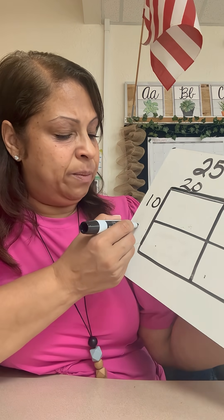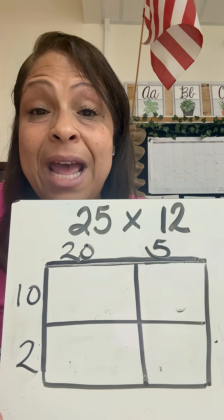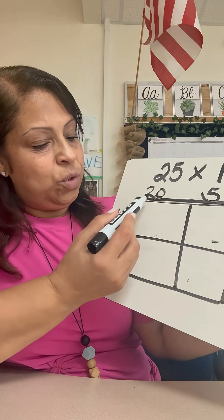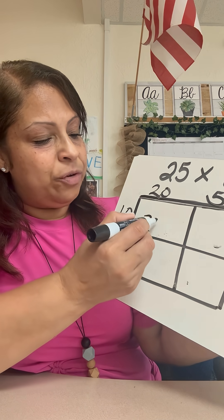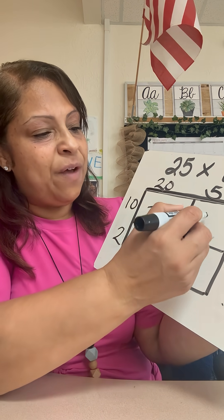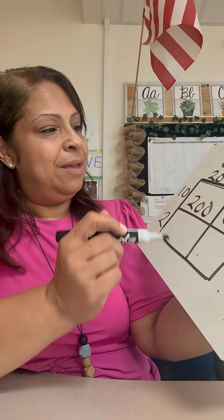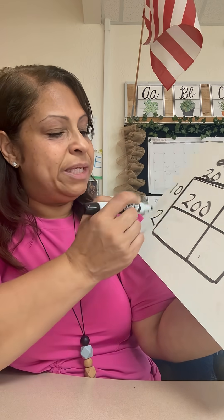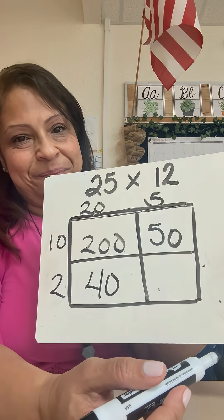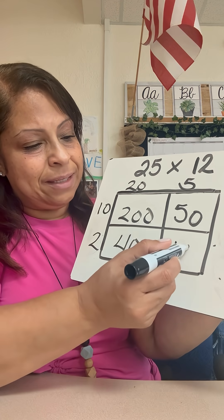Now we multiply like this: 20 times 10 is 200, 10 times 5 is 50, 20 times 2 is 40, and 5 times 2 is 10.